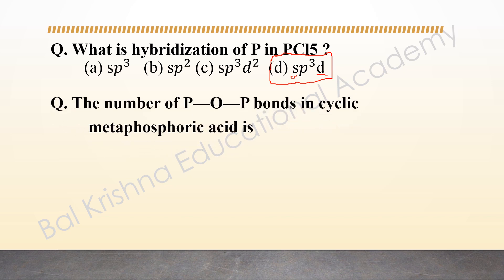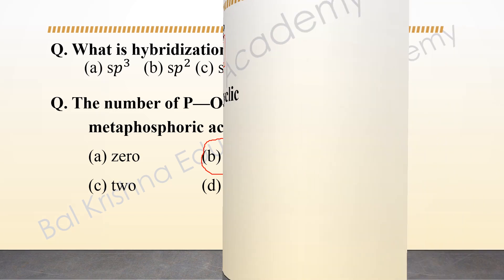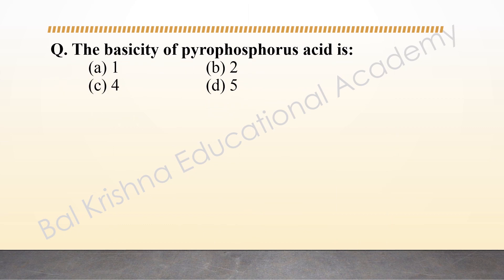The next question is: the number of P-O-P bonds in cyclic metaphosphoric acid. The options are 0, 3, 2, and 4. The formula of cyclic metaphosphoric acid is (HPO₃)₃. When you draw its cyclic structure, there are three P-O-P bonds present in cyclic metaphosphoric acid.